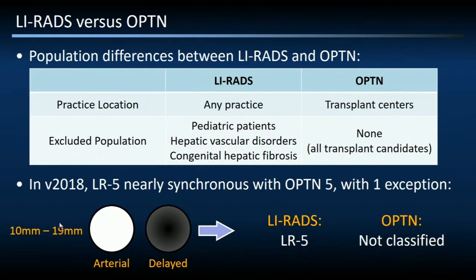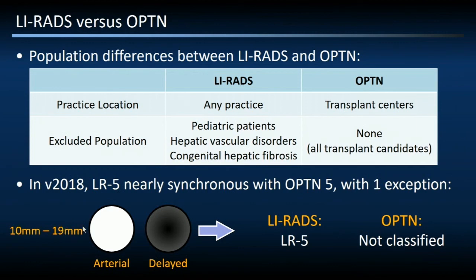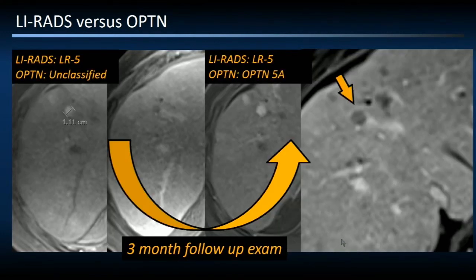There are key population differences between who LIRADS and OPTN applies to. LIRADS can generally be applied in any practice setting, although some patient populations are excluded due to differences in lesion sensitivity or specificity. OPTN is preferred only at transplant centers, and any patient considered a transplant candidate can have the OPTN classification applied to them. LIRADS has tried to become nearly coherent with OPTN, and there remains one sole exception: a lesion that is 10 to 19 millimeters showing hypervascularity on arterial phase imaging with only intralesional washout and no delayed capsule-like enhancement or threshold growth. In LIRADS, this is an LR5 lesion. In OPTN, this is not classified.